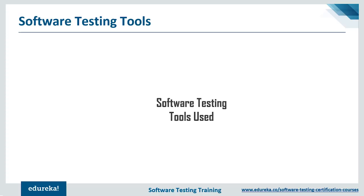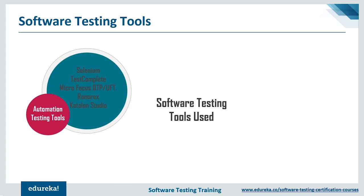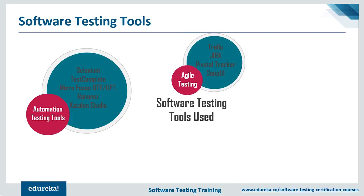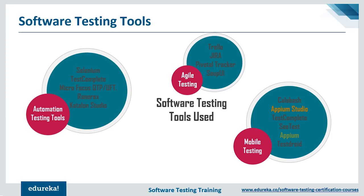Software testing provides development teams with different ways and tools to determine the quality of their software. There are tons of testing tools available. For automation testing, popular tools include Selenium, Ranorex, and Katalon Studio. For agile testing, you have Jira and SoapUI. For mobile testing, you have Appium, CTest, TestComplete, and Calabash. For load testing, tools like Apache JMeter and NeoLoad are widely used.